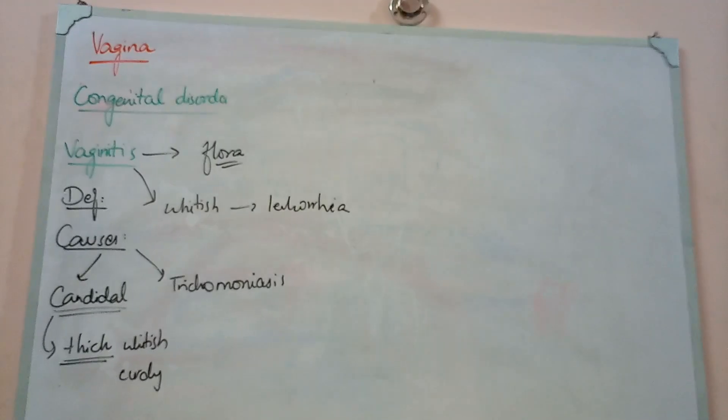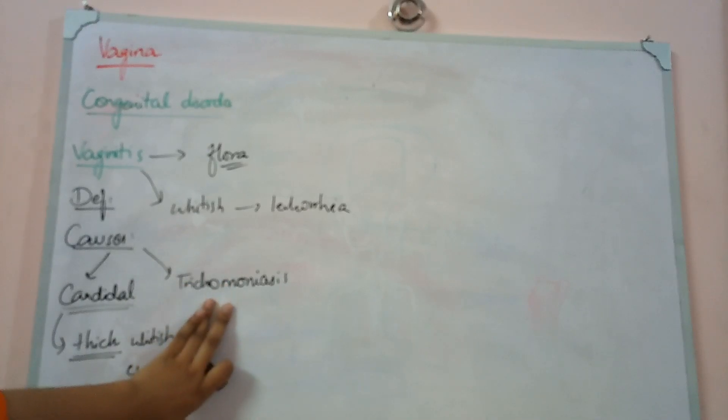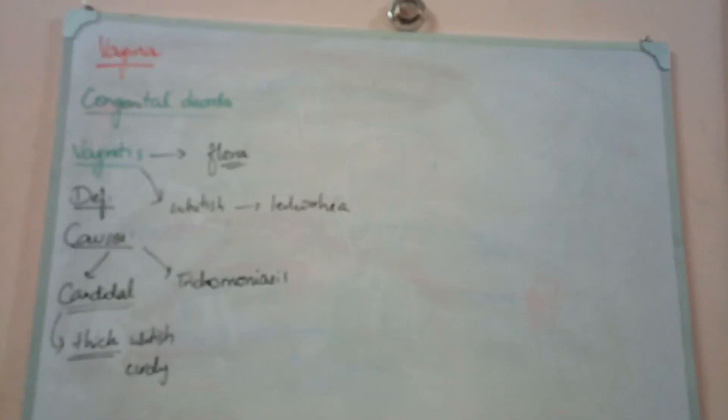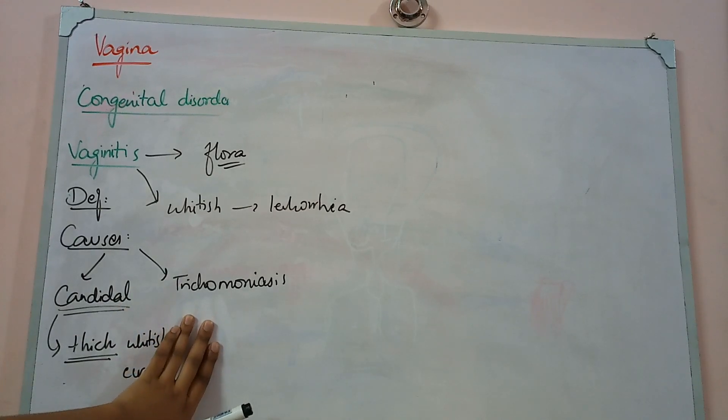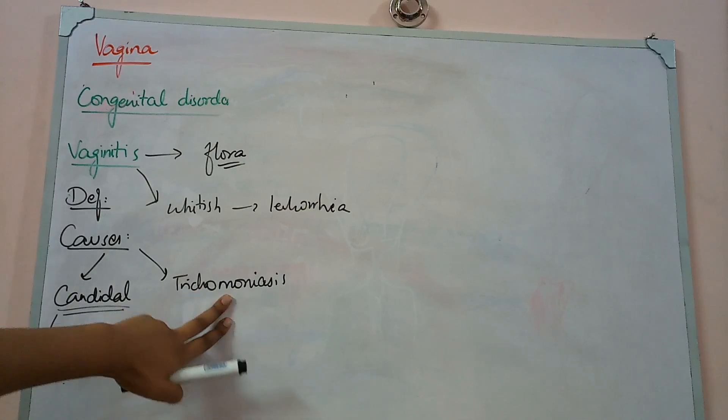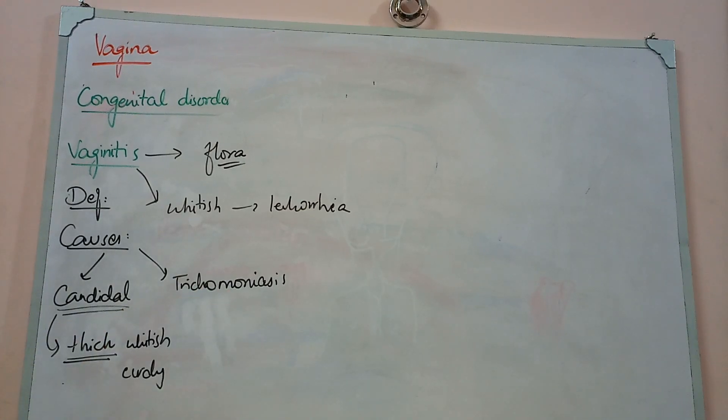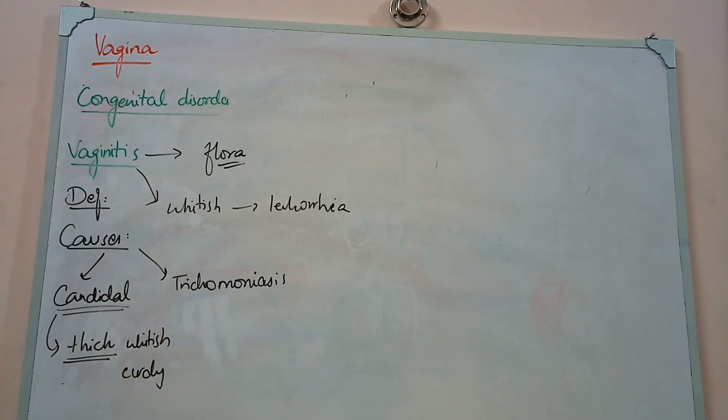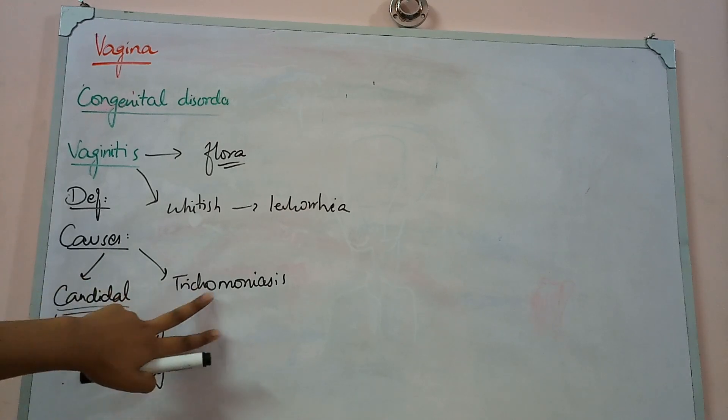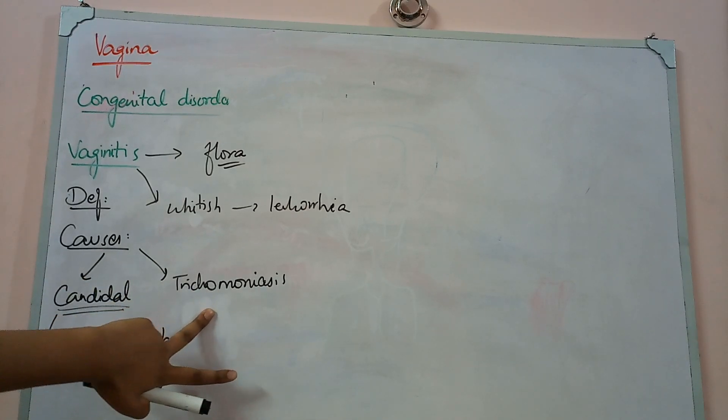The other condition is Trichomonas vaginalis. When this organism causes infection, the difference is that the discharge is grey and somewhat less thick compared to Candida discharge. This is the main differentiating feature: Candida has thick whitish curd-like discharge while Trichomonas has thin grey discharge. Candida is basically a member of normal flora, while Trichomonas is a sexually transmitted disease.